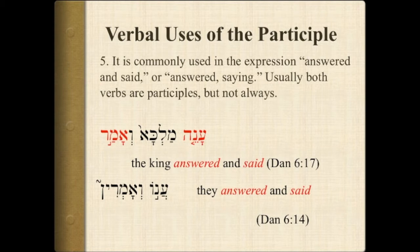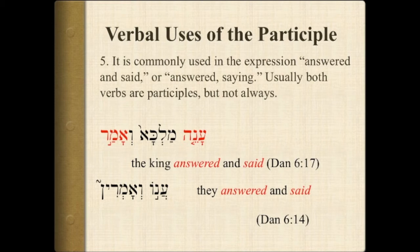Notice the first example: ane and amar, "answered and said," are both participles in this particular context. However, just a few verses earlier, "they answered and said" — the first verb, ano, is a perfect plural, whereas amarine is a masculine plural participle.